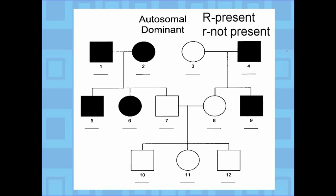Here we have an autosomal dominant pedigree. If capital R represents that the trait is present and little r represents that the trait is not present, then any shaded individual has to have a big R — because it's dominant, having the trait means they must carry at least one big R. So I'm going to go through the pedigree and put a big R in front of all of the shaded individuals.